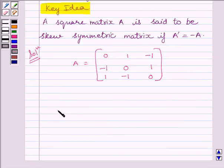First of all, let us find A transpose by interchanging the rows and columns of A. So we get A transpose equals [0, -1, 1; 1, 0, -1; -1, 1, 0].